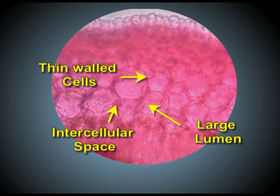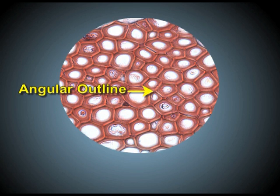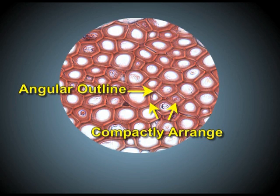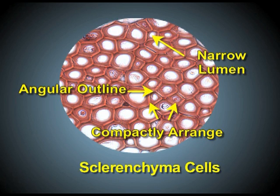Such thin-walled cells are called parenchyma. In contrast to this, we have thick-walled cells as well in the hypodermis, and some cells of the cortex are also thick-walled. These thick-walled cells have angular outline, they are compactly arranged, they do not have intercellular spaces, and they have narrow lumen. Such thick-walled cells with these characteristics are called sclerenchyma.